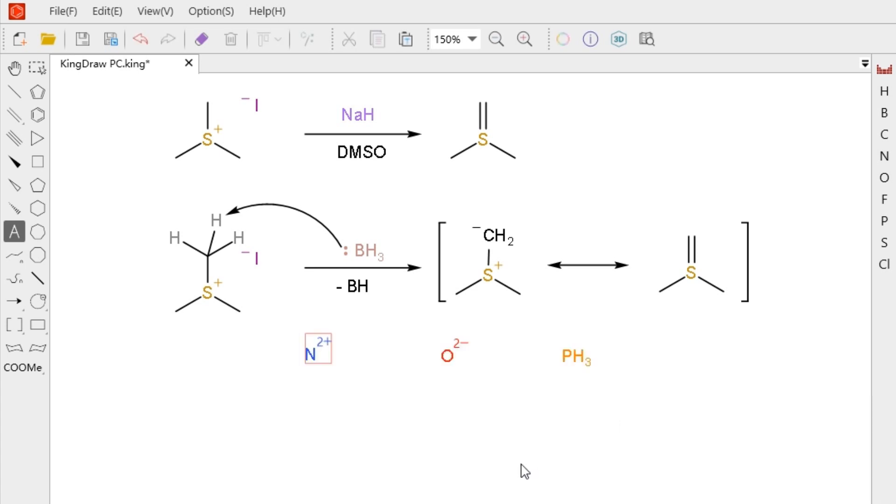When clicking multiple times to add radical and lone pair, you need to press and hold the rotation to stagger the adding position. Otherwise, they will overlap.